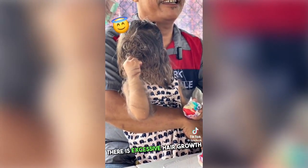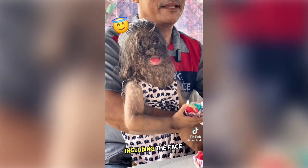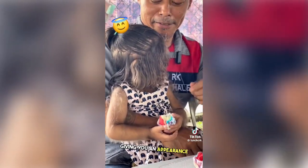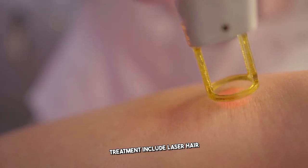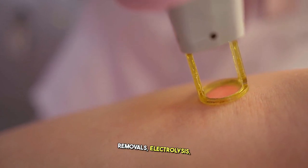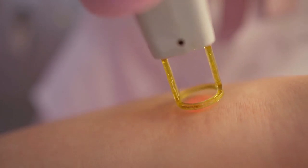In this syndrome, there is excessive hair growth all over the body, including the face, ears and limbs, giving you an appearance of a werewolf. Treatment includes laser hair removal, electrolysis, and medications to help manage hormonal imbalances.